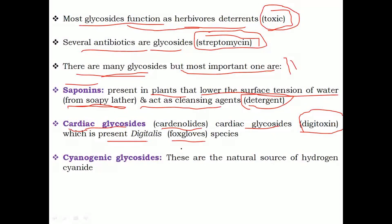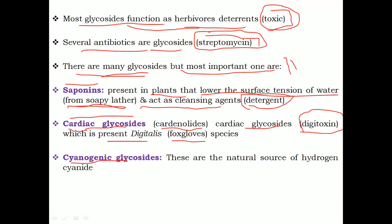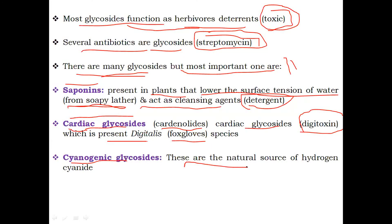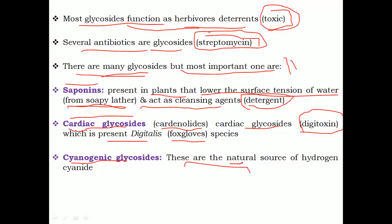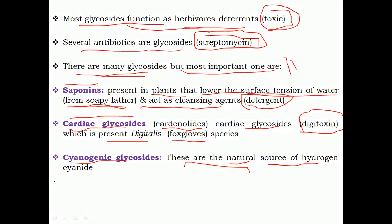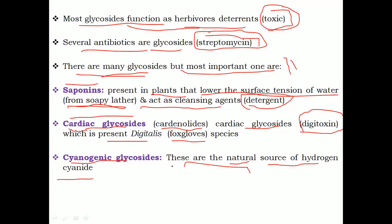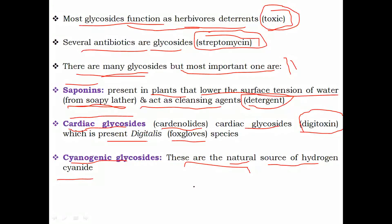Cardiac glycosides — for example, digitoxin, which is present in the species Digitalis (also known as foxglove) — are an important example. The third one is cyanogenic glycosides, which are natural glycosides found in plants and are the natural source of hydrogen cyanide. These are the three most important examples of glycosides. This concludes the discussion on amino sugars, sugar alcohols, sugar acids, and glycosides. Thank you for watching.